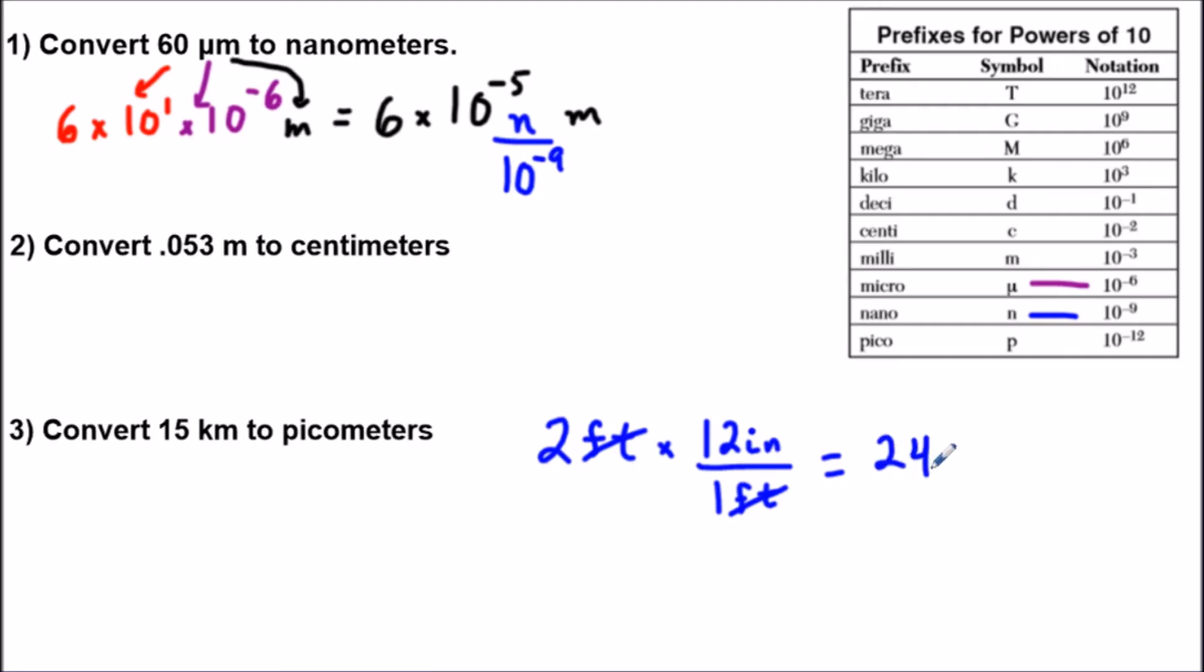And I have 2 times 12 is 24 inches. So that's the concept that we're using here. N and 10 to the negative 9 are equal. So I'm really just multiplying this expression by 1.